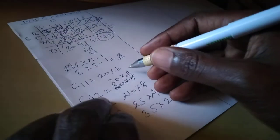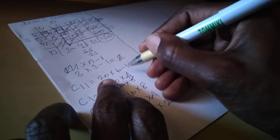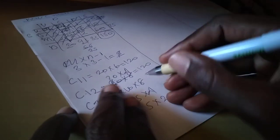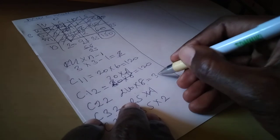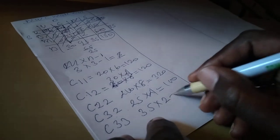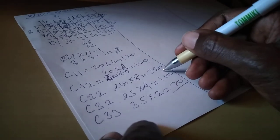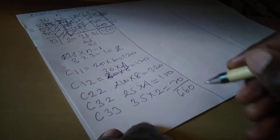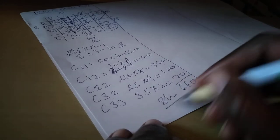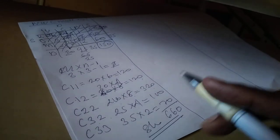When you multiply: 20×6 = 120; 30×4 = 120; 40×8 = 320; 25×4 = 100; 35×2 = 70. The total is 120 + 120 + 320 + 100 + 70 = 630. So the minimum cost for transporting the product from source to destination is 630.